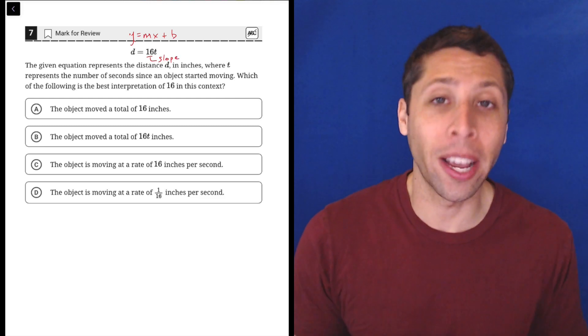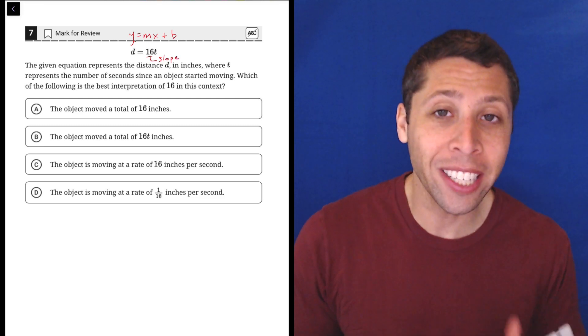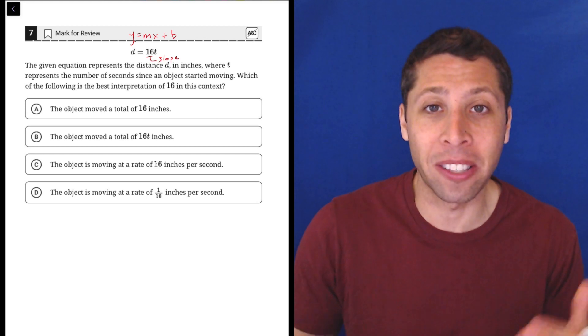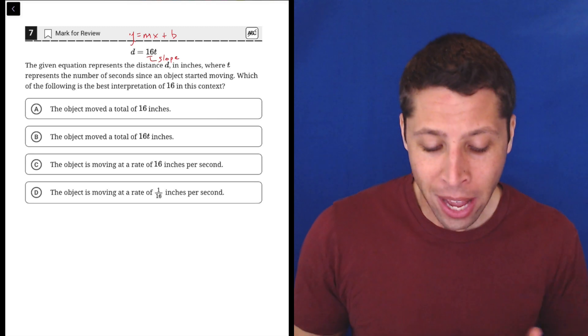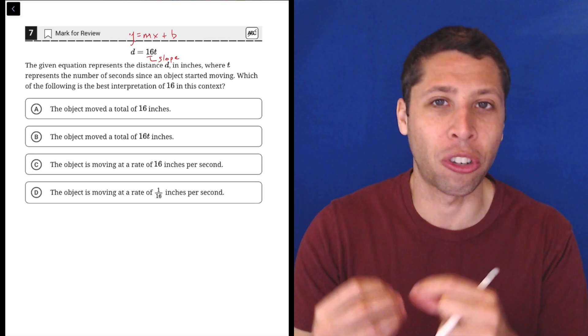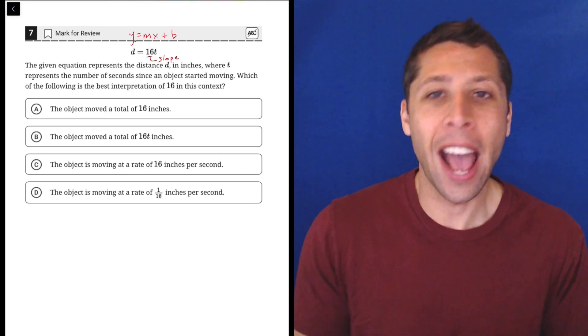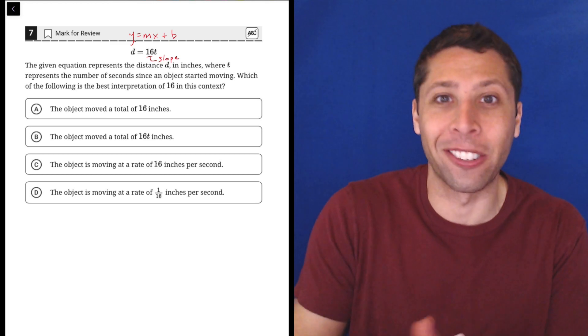Now you may notice that there's no B. B would be the y-intercept we've seen in some other questions already in this section, but there isn't one. Sometimes that's okay, that just means the starting value is zero. It kind of makes sense with this story because we're just tracking how far the object moves since it starts moving, so when it hasn't moved at all, there's no distance that it's covered.